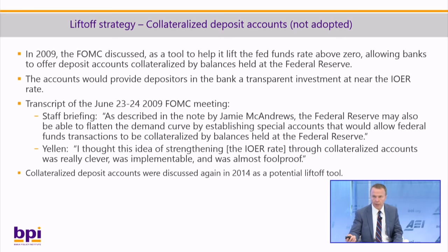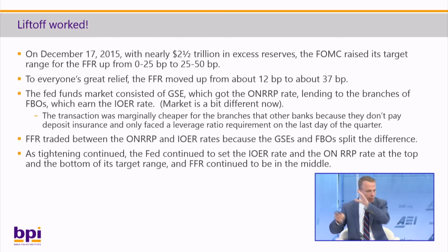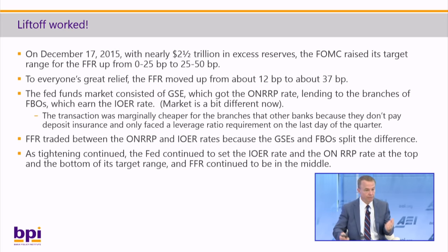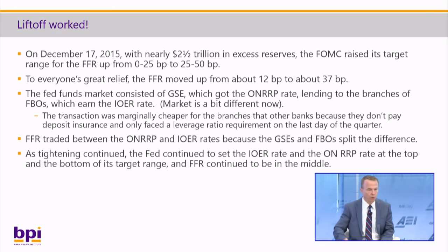In December 2015, the Fed raised its target for the federal funds rate — raising the range from zero to 25 basis points up to 25 to 50 basis points, raising IOER to 50 and the overnight RRP rate to 25. And to everyone's great relief, the federal funds rate moved up 25 basis points from about 12 basis points to about 37 basis points. If you get the image of the NASA control room worried that a rocket won't go off and it actually goes off and everyone's cheering — that's pretty much what it was like at the Fed.